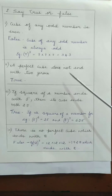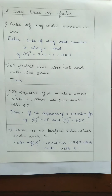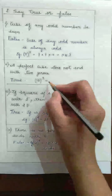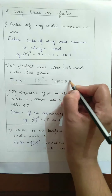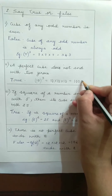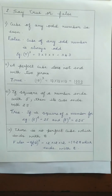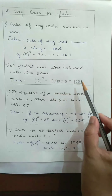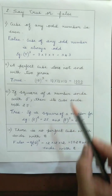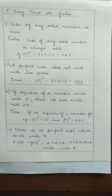The second question: 'A perfect cube does not end with two zeros.' Yes, this is a correct statement — that is true. We can consider the example 10 cube. 10 into 10 into 10 — 10 tens are 100, and 100 into 10 is 1000. A perfect cube, if you consider 1000, ends with three zeros, not with two zeros. Therefore the given statement is true.